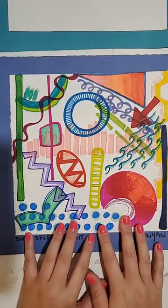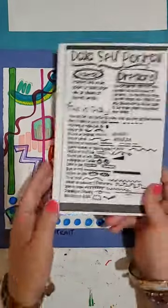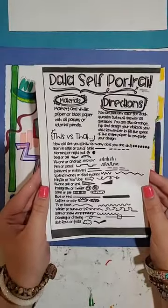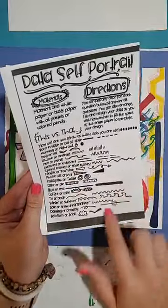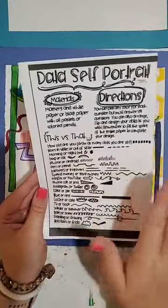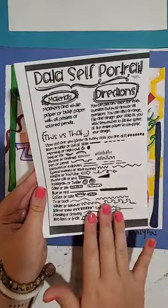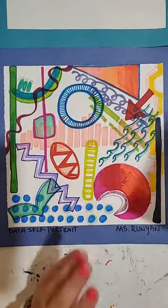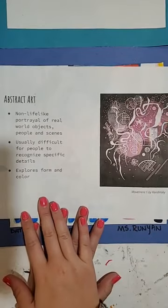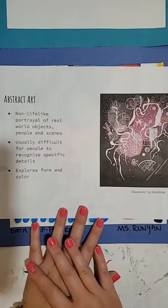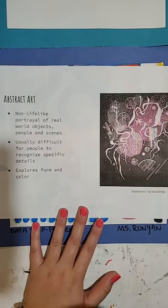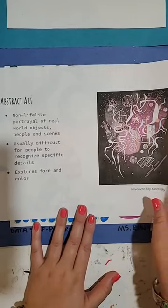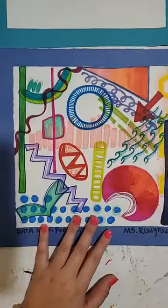We're going to be using data about ourselves. I have this handy dandy 'this or that' sheet, and this is basically how we're going to be making our self-portraits. We're going to look at these items and pick one — this or that — and this will create our data for our self-portraits. Since this is sort of an abstract art piece, what is abstract art? Abstract art is a non-lifelike portrayal of objects and scenes — usually something nonspecific, hard to recognize. It focuses on form, shapes, and color.